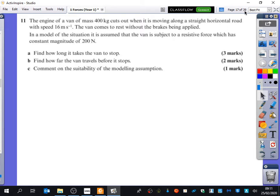Okay, so this was question 11 from the homework. Let's just read through and think about what's happening here. The engine of a van of mass 400 kilograms cuts out when it is moving along a straight horizontal road with speed 16 meters per second. The van comes to rest without the brakes being applied. In a model of the situation, it is assumed that the van is subject to a resistive force which has a constant magnitude of 200 newtons.